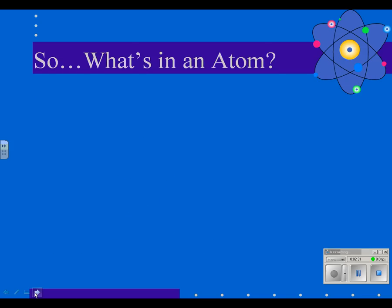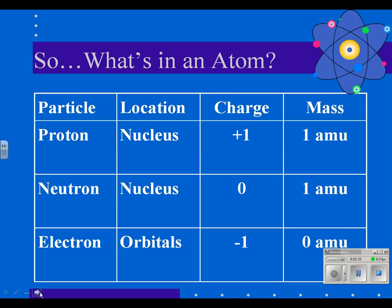So, what's in an atom? Remember that an atom has protons, neutrons, and electrons. The protons and neutrons are found in the nucleus. Electrons are found in orbitals circling the atom. We're not going to go into orbitals in great gory detail, that's for chemistry. The mass of protons is one atomic mass unit, that's the definition. An atomic mass unit is the mass of a proton and the mass of a neutron.